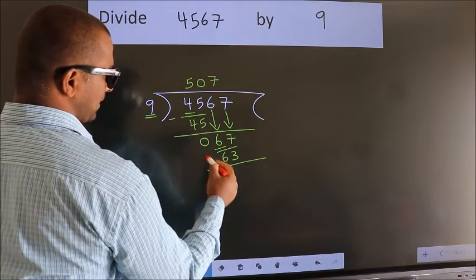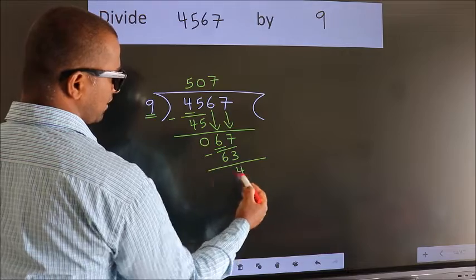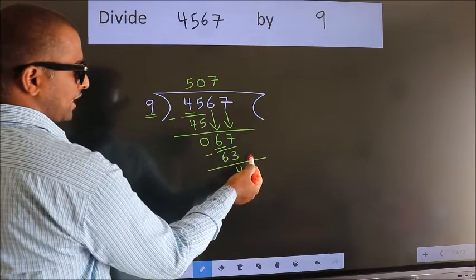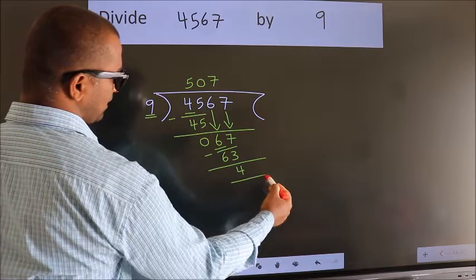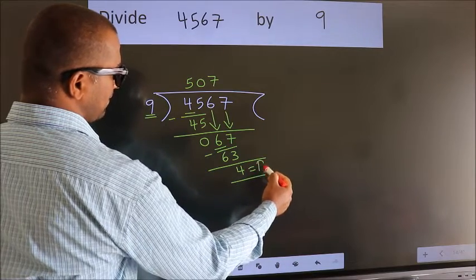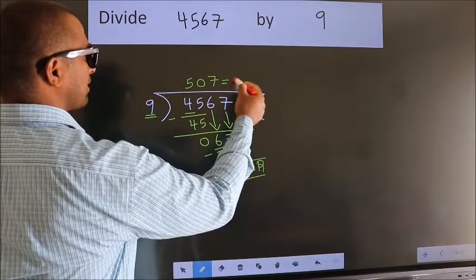Now we subtract. We get 4. No more numbers to bring down, so we stop here. This is our remainder. This is our quotient.